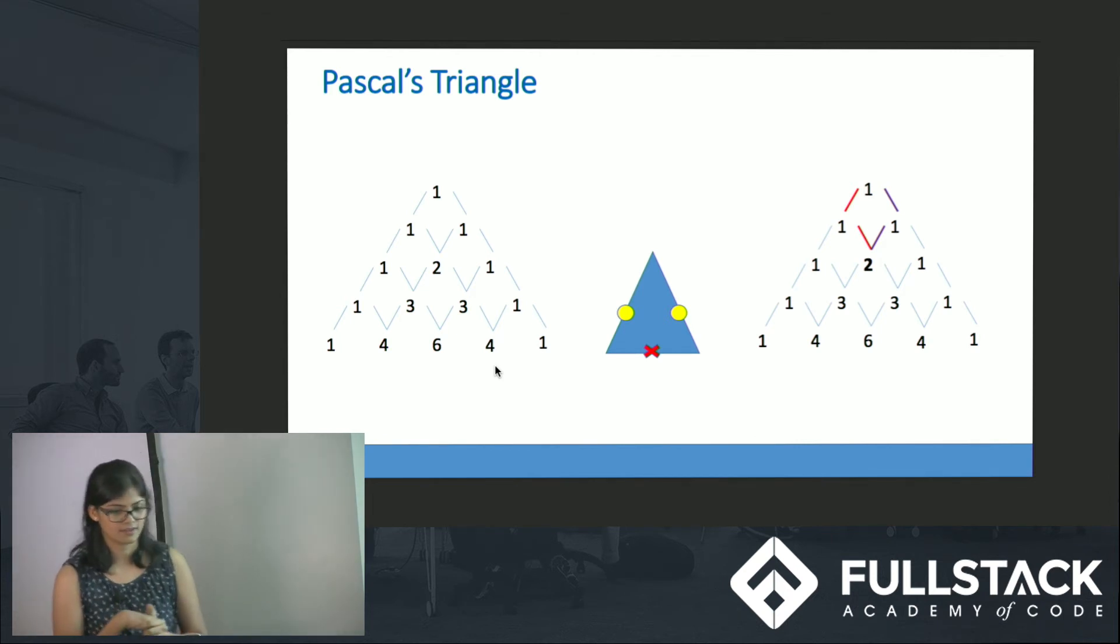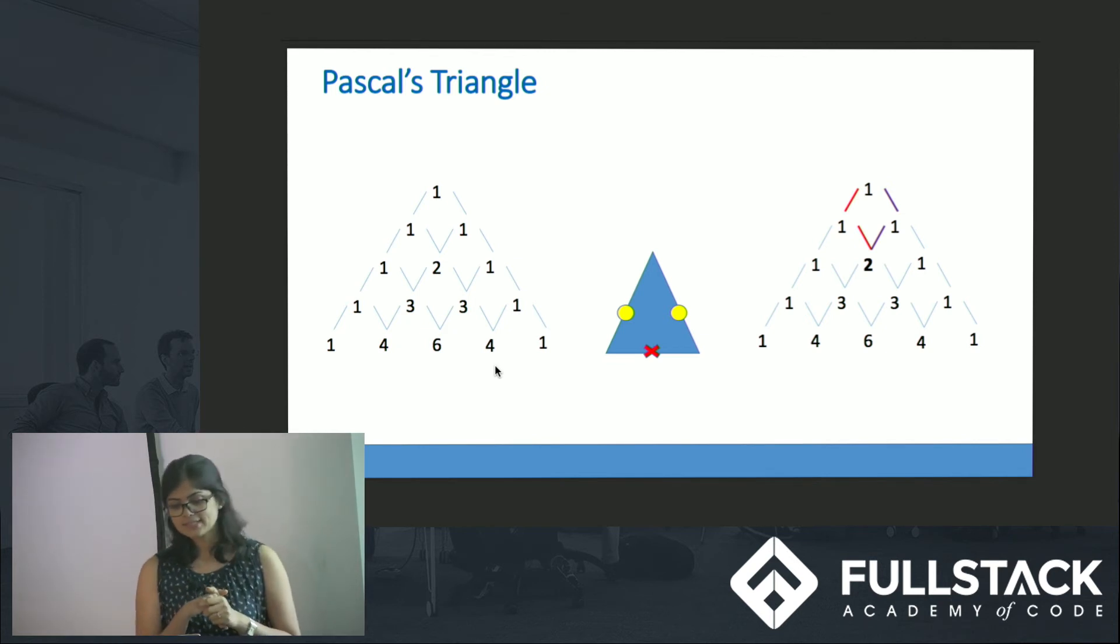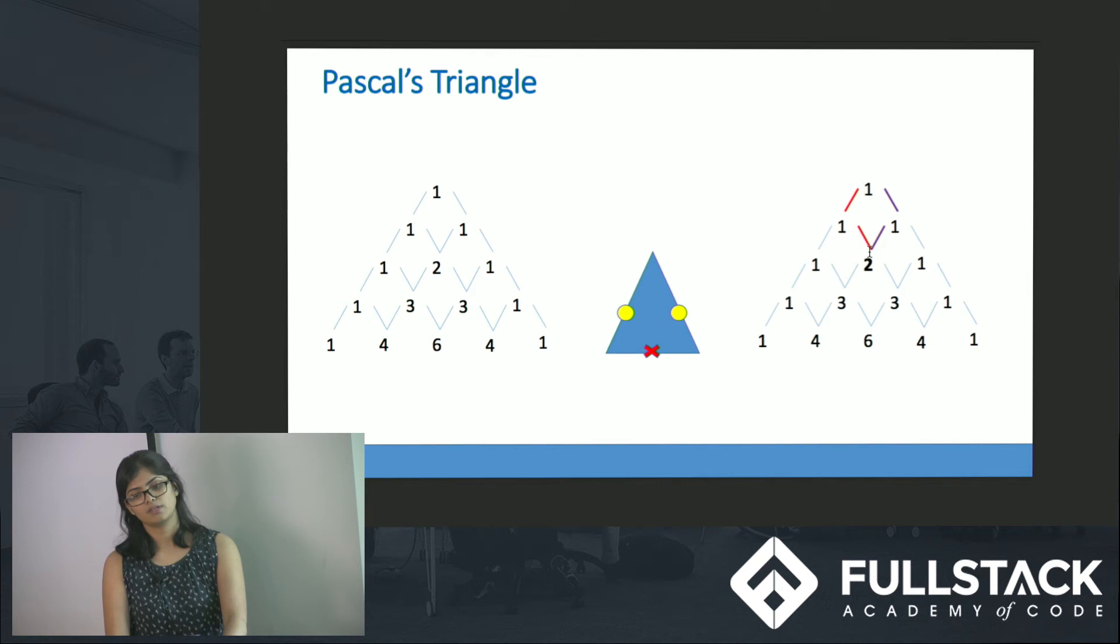Pascal's triangle computes the binomial coefficient. How many ways can I reach this place? I can reach this position in one way. How many ways can I reach this position? I can reach, I can take this path that is 1 or I can take this path that is 2.